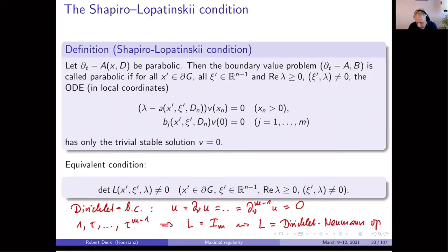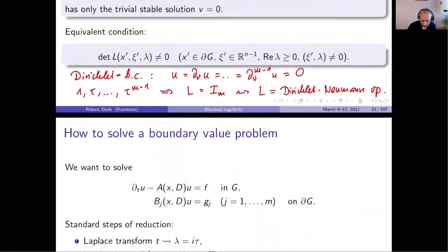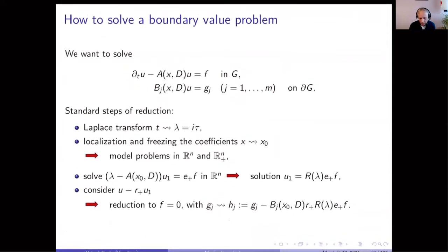The generalized Dirichlet-Neumann operator appears several times in PDE. If you have a second order operator, it's really a one-by-one matrix — a scalar symbol — which is the famous Dirichlet-Neumann operator. Understanding the mapping properties of this general Dirichlet-Neumann operator will be very important. To summarize: what we want to do is solve a boundary value problem. I consider the parabolic version: D_t u minus Au equals F, and boundary conditions B_j u equals G_j.